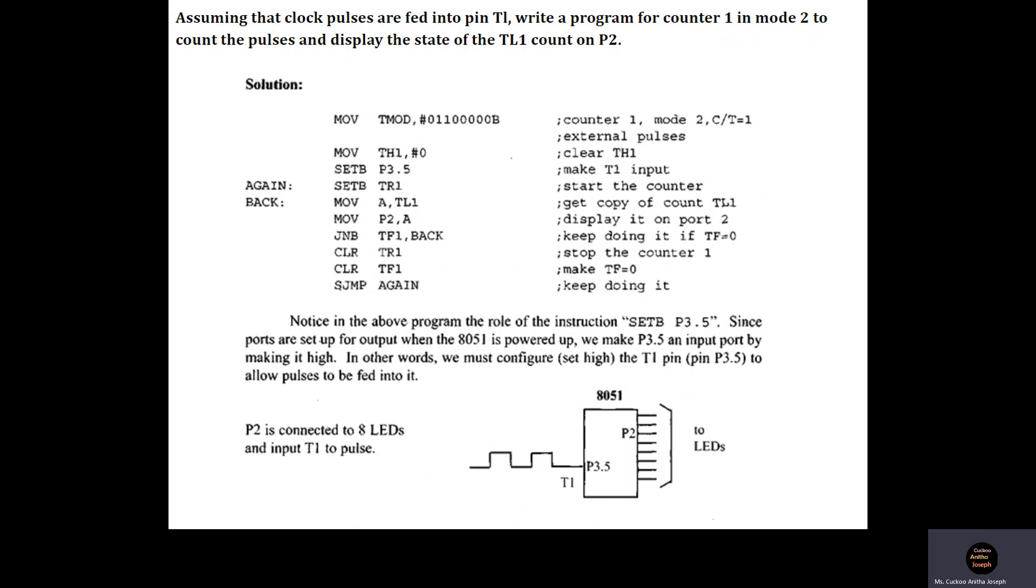The next step is that we are monitoring the overflow flag, and as long as the flag is not set, we will continuously send the count to port 2. So the instructions MOV A, TL1 and MOV P2, A will be repeated as long as the overflow flag is not set. So the instruction for that is JNB TF1, BACK. BACK is the label of the instruction MOV A, TL1. So as long as the flag is not set, the count will be displayed on the LEDs.